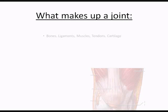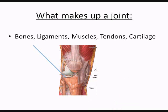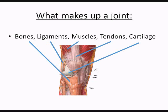So what makes up a joint? We've got bones, ligaments, muscles, tendons, and cartilage — those are the basics of a joint. As you can see here, we've got lines connecting showing you where each one is. We have two bones come together, meet together, and that's where the joint is. The ligaments hold those bones together and support the joint. Ligaments connect bone to bone.